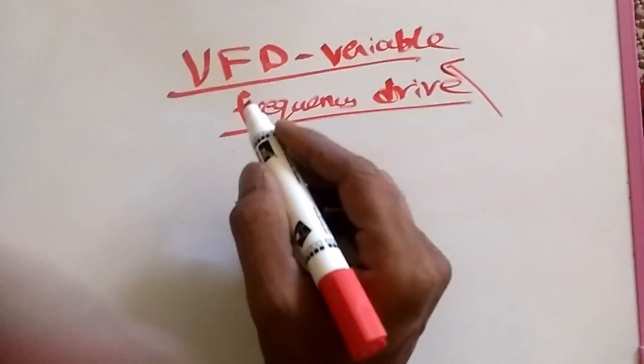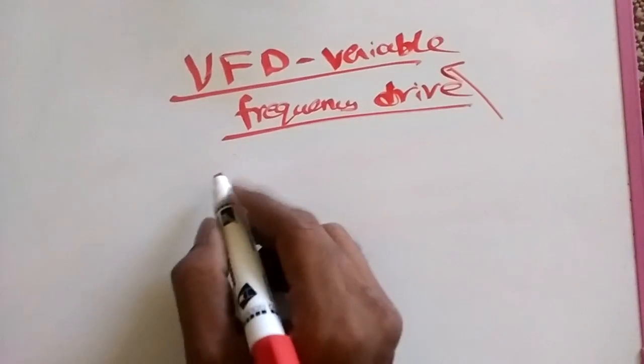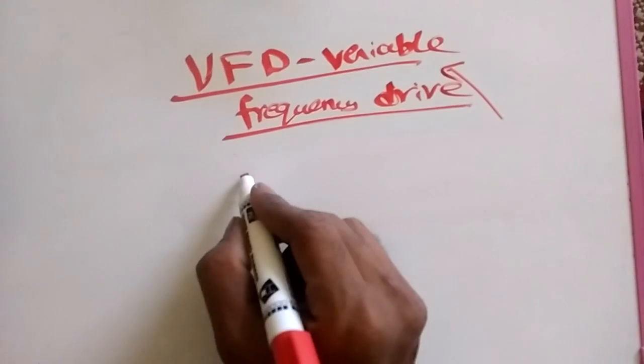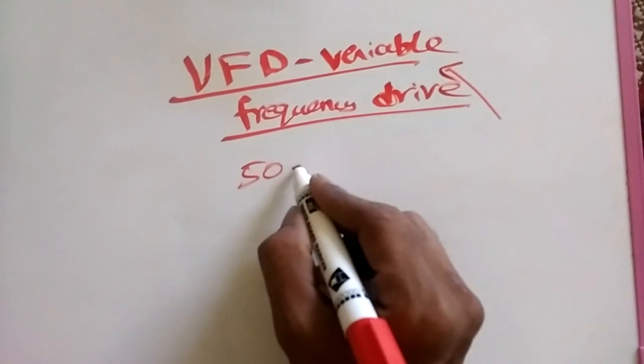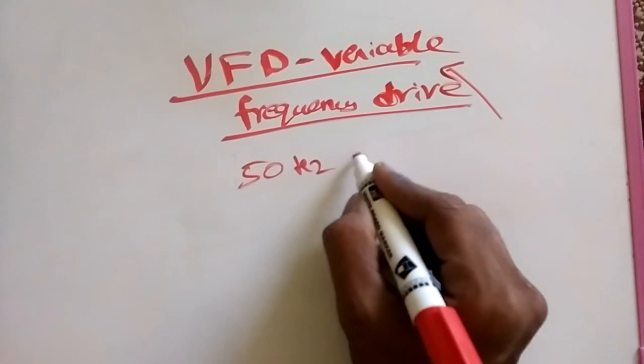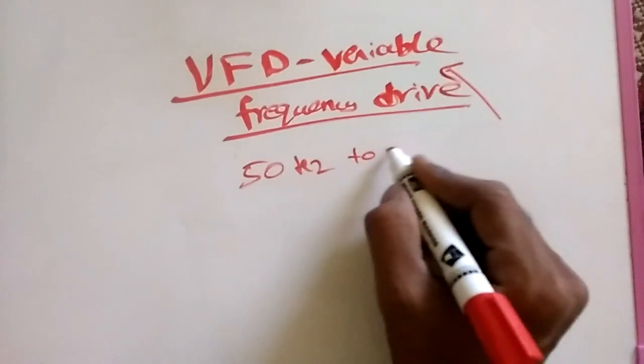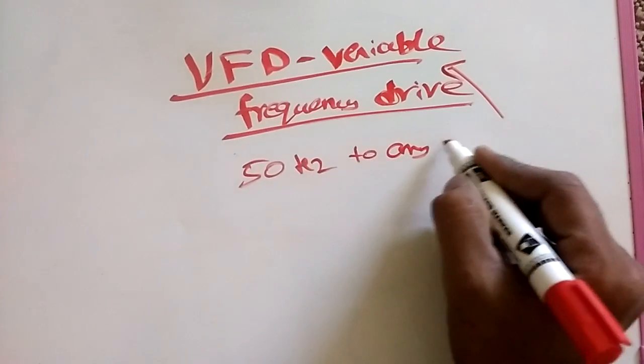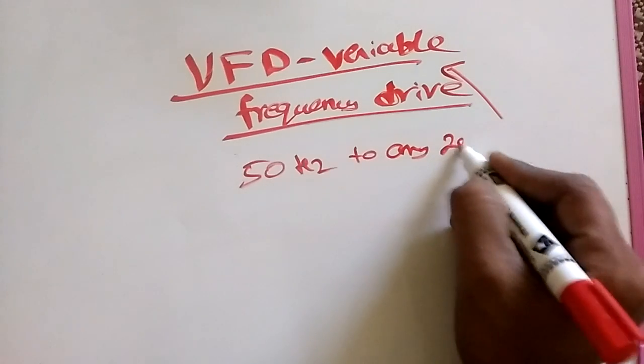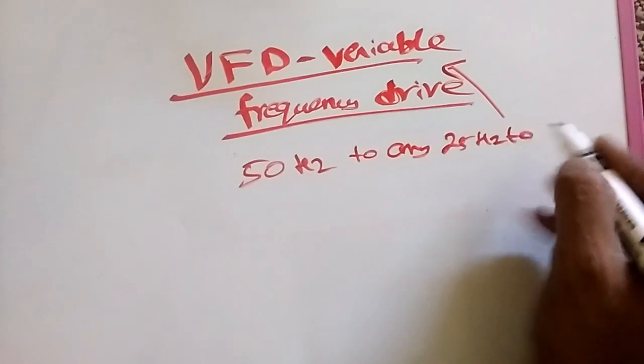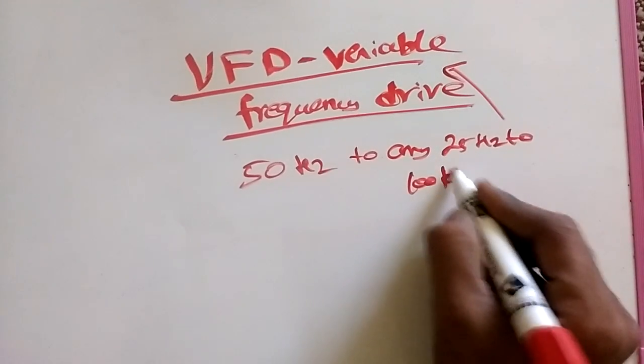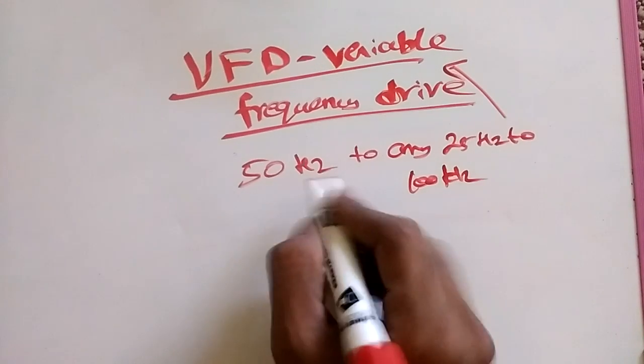In variable frequency drive, what we are going to do? How do we change the frequency in 50 Hz? For example, in 50 Hz, how do we change this to any frequency, 25 Hz to 100 Hz? How do we change this method?